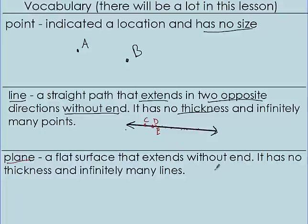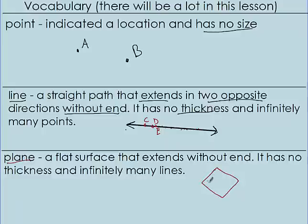A plane is just some surface, so the way we can draw that is like a diamond shape or a square — usually it's some kind of square rectangle. This is going to be a surface, and that flat surface extends without end. We don't have to draw arrow shapes; this is just a surface and we say it has no end. There's no thickness, and you can draw an infinite amount of lines across this surface — a line going like this, a line going like this, all sorts of lines.